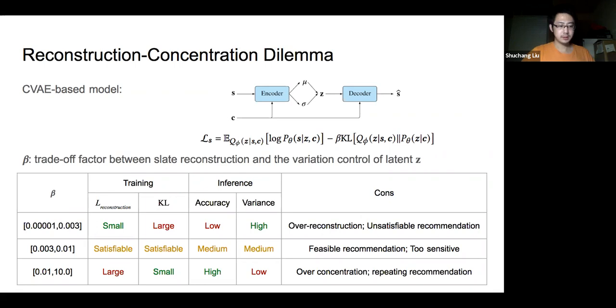We use existing CVAE-based model, whose optimization involves a factor beta, which trades off between the slate reconstruction loss over the training records and the KL divergence that controls the distribution of the latent slate encoding Z. In our observation, we found that the most settings of beta either falls into over-reconstruction extreme or the over-concentration extreme. As summarized in the table, neither of this extreme provides feasible recommendation.